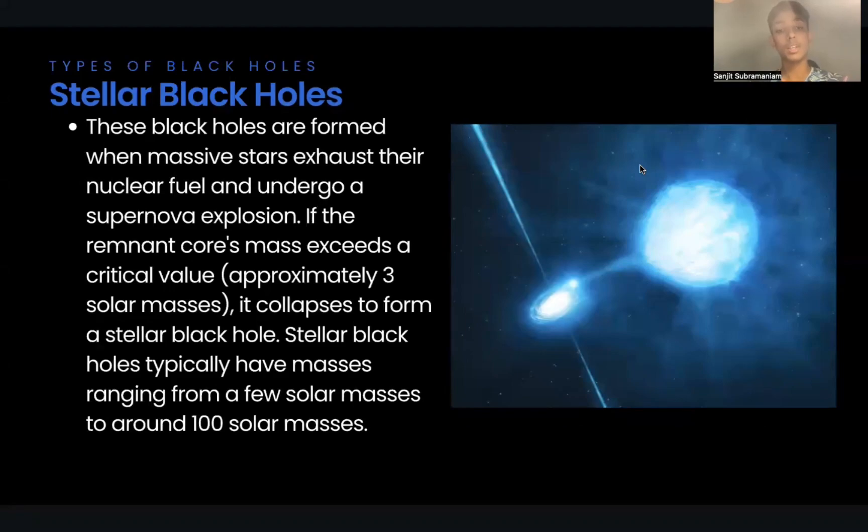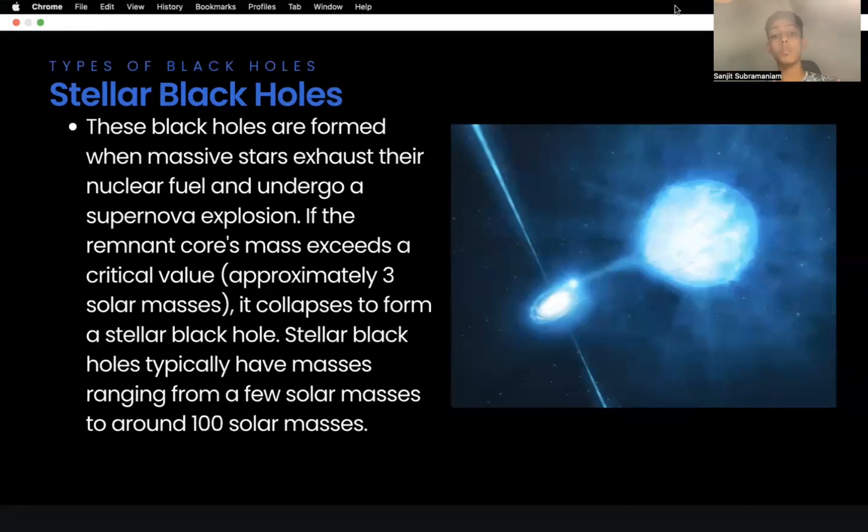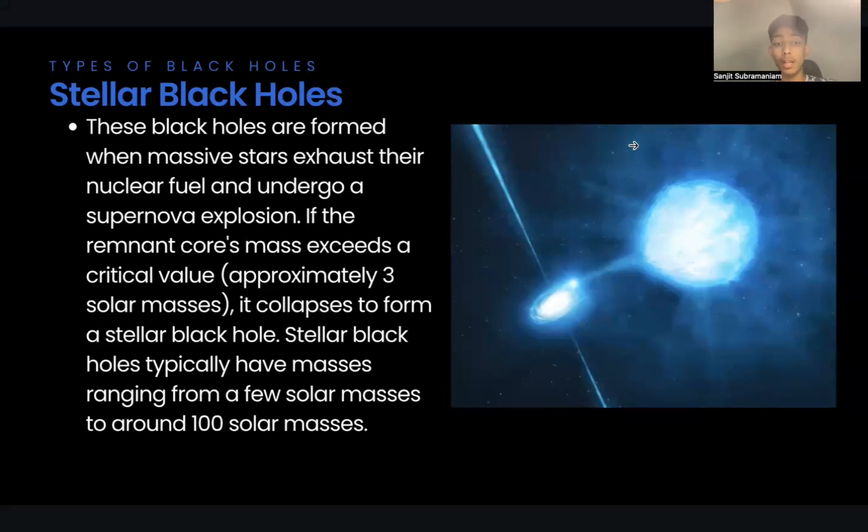We're going to talk about stellar mass black holes. These black holes are formed when massive stars exhaust their nuclear fuel and undergo a supernova explosion. If the remnant's core mass exceeds a critical value, approximately three solar masses, it collapses to form a stellar black hole. Stellar black holes have typically masses ranging from a few solar masses to around a hundred solar masses. Next, Banu is going to talk about the intermediate and supermassive black holes.